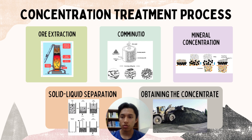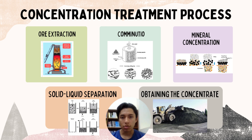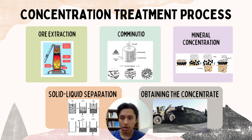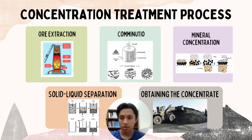Ore extraction is done through metallic mining and is the starting point for the concentration processes. Comminution is a stage in mineral processing that involves the reduction in size of mineral particles, which is achieved through crushing and grinding. This process is crucial to achieve an appropriate degree of liberation of mineral particles, obtained in the crushing and grinding stages.